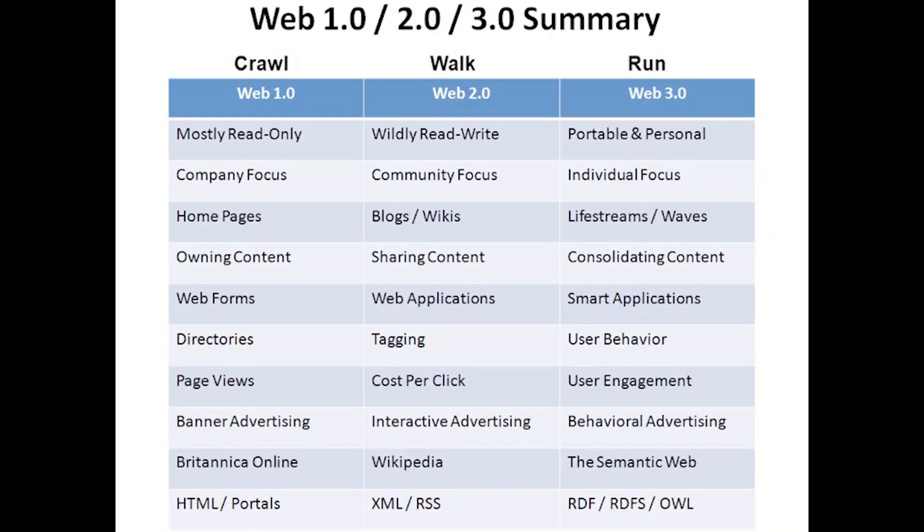It all starts with Web 1.0, the first generation of the worldwide web. It's everything you need for information — like Google and places of business broadcasting their information. It's all the search engines and basic things you see today. Web 2.0 is known as the social media era — Facebook, Twitter, MySpace, and YouTube — where you can create a platform to interact with other people online.